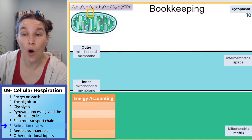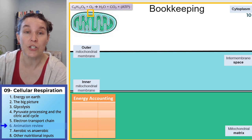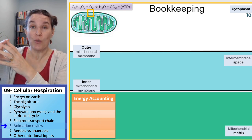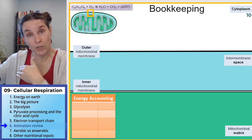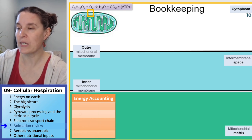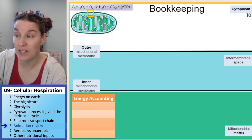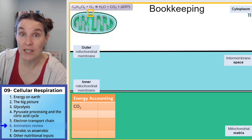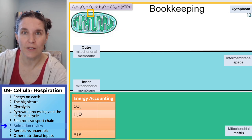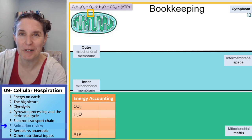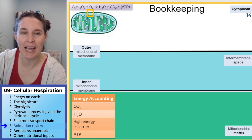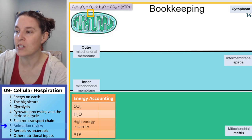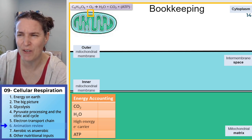All the way through this, we're going to do our energy accounting and fill in this table. We're going to do a total energy accounting as we go. The things we're going to keep track of are carbon dioxide, water, ATP, and the high-energy electron carriers. I left the high-energy electron carriers to last because I want to give you a visual for how they work.